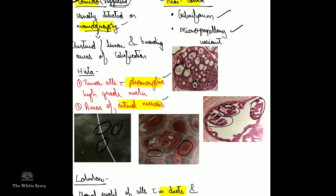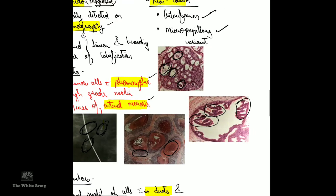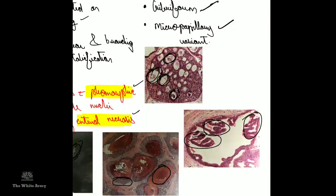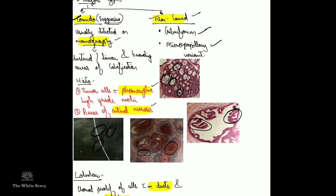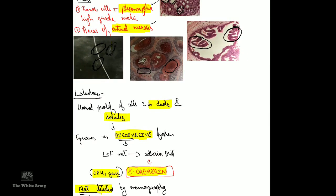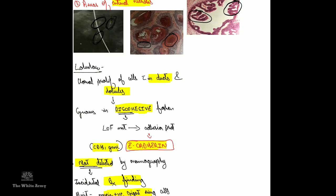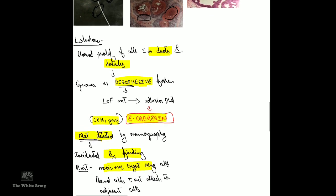Non-comedo carcinoma can be of the cribriform variety, where a sieve-like pattern is present resembling the cribriform plate, or the micropapillary variant, which can arise with or without fibrovascular cores.